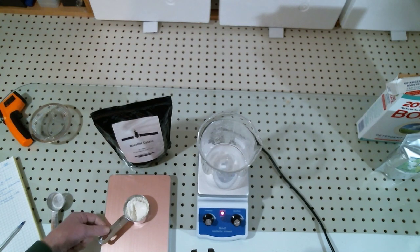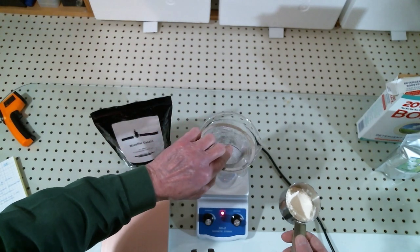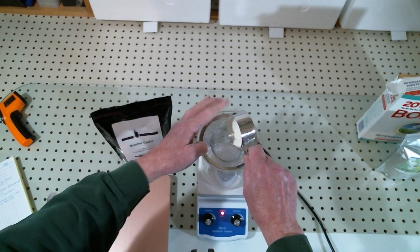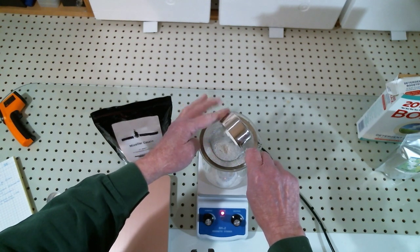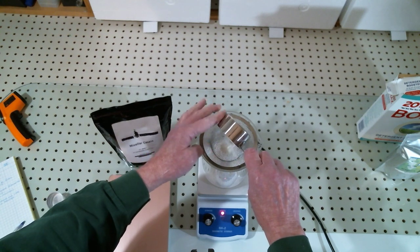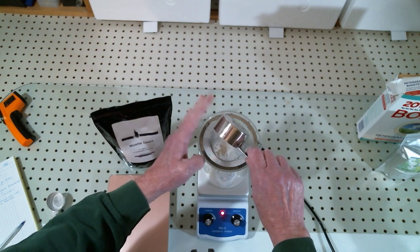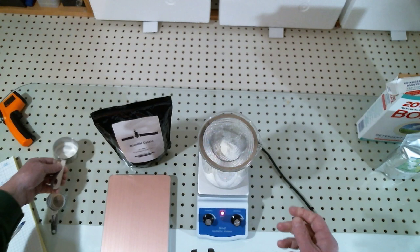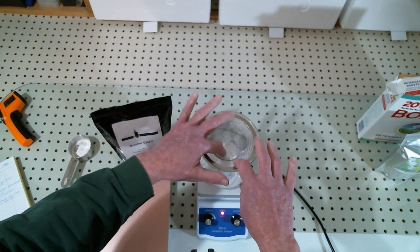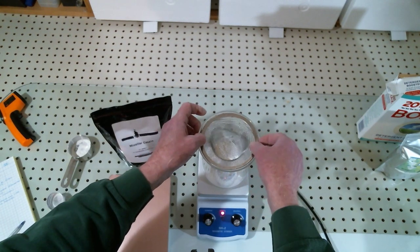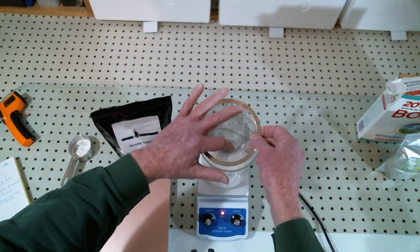Now we're going to add the 10 grams of casein, and I'm going to sift this in. Casein does like to clump once it hits water, and I'm sure even the sifting is not going to help that much, but it does somewhat. After we do this, we're going to need to let this stir for a long time. I'm going to give it a couple of hours to go into solution to get out the clumps.